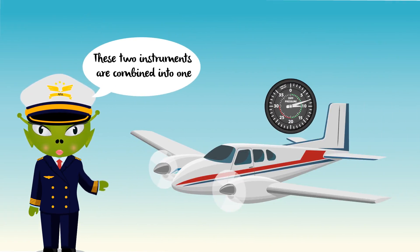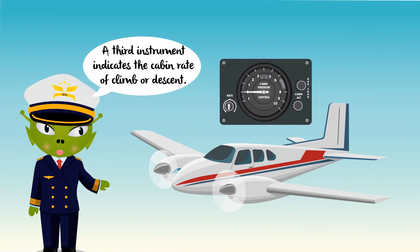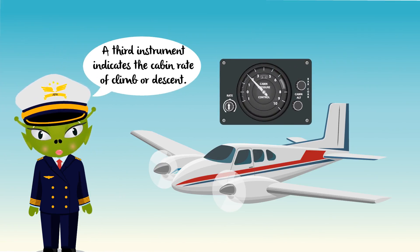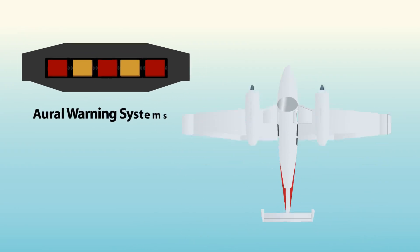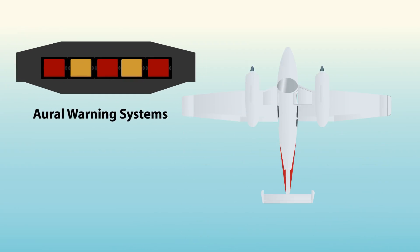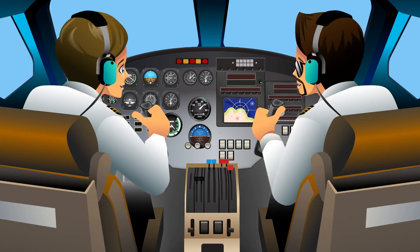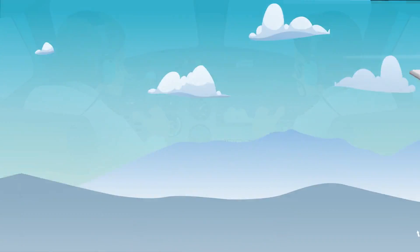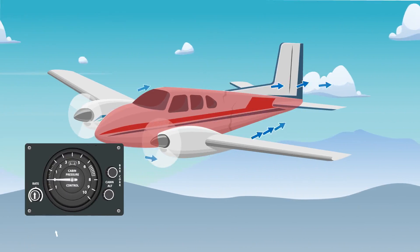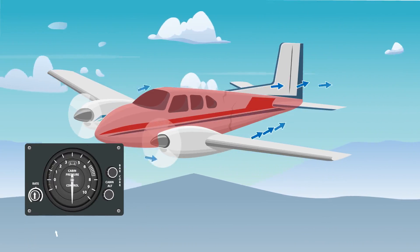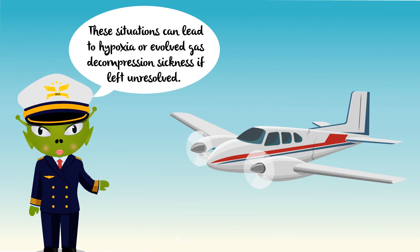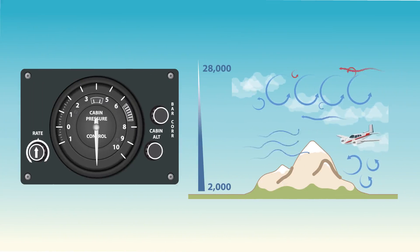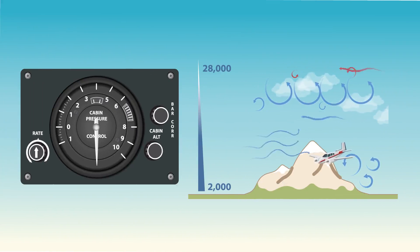A cabin altimeter is also provided as a check on the performance of the system. In some cases, these two instruments are combined into one. A third instrument indicates the cabin rate of climb or descent. While automatic visual and aural warning systems are included in all pressurised aircraft, the pilot must be aware of the danger of accidental loss of cabin pressure and be prepared to deal with such an emergency. Such emergencies include explosive decompression and rapid decompression, which can lead to hypoxia or evolved gas decompression sickness if left unresolved. Rapid descent from altitude is necessary to minimise these problems.